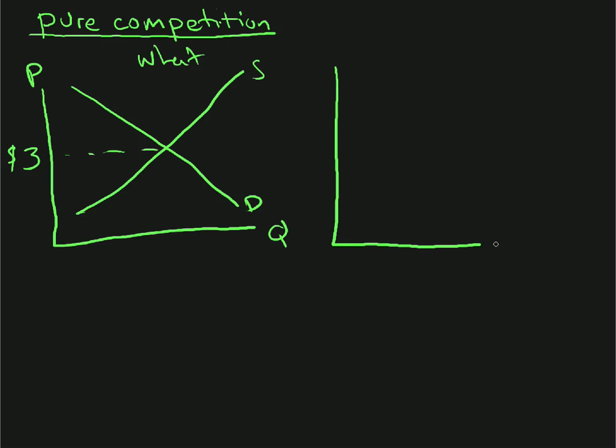This is what we're concerned with, this company over here. This is just an average, typical company that makes wheat, Company A. Price, quantity. This company takes this price - that's how we get the $3 - and it's a price taker. And that $3 is equal to its marginal revenue.